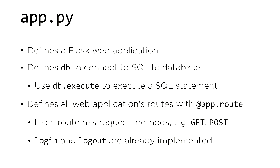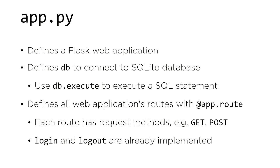Let's start with app.py, where you'll write most of your Python code for this web application. App.py defines a Flask web application and also defines a variable called db, which allows you to connect to a SQLite database. You can use the function db.execute to execute a SQL statement on your SQLite database. Later in app.py, you'll also see definitions for each of the routes inside your web application, each starting with the syntax at app.route.